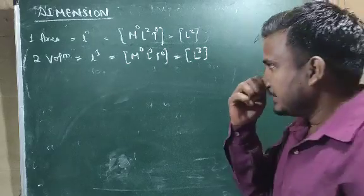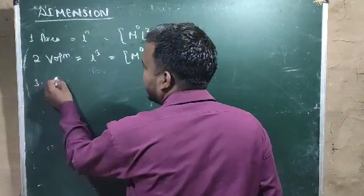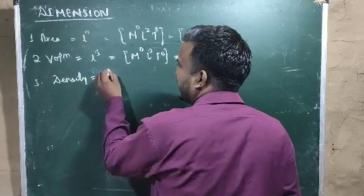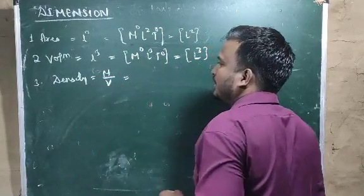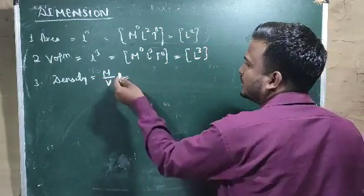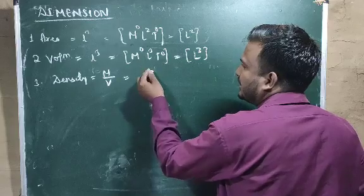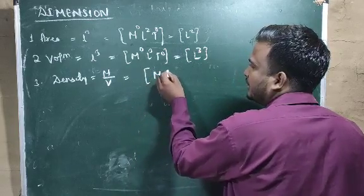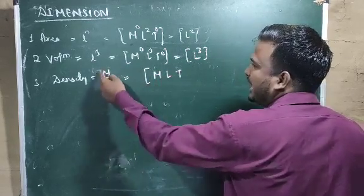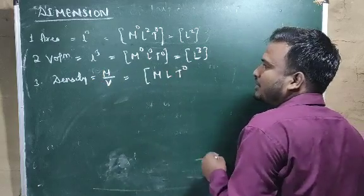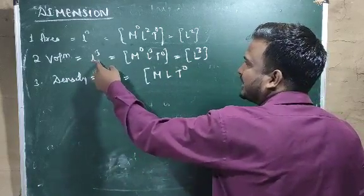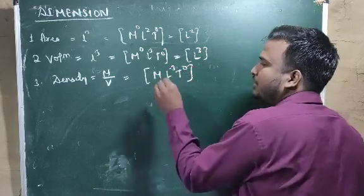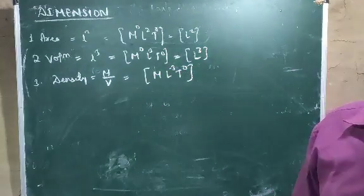Number 3 is density. Density equals mass divided by volume. For mass, M is there, and there is no time, so T⁰. Volume is L³, and when L³ goes to the denominator it becomes L⁻³. So the dimensional formula for density is M L⁻³.